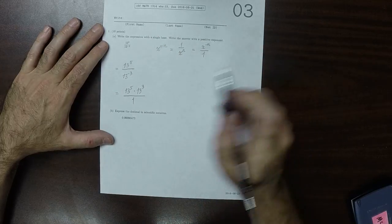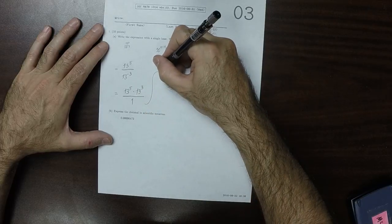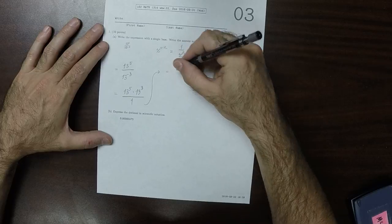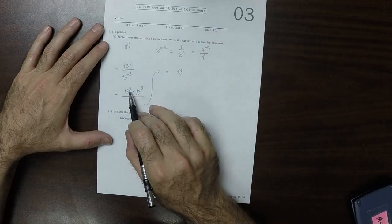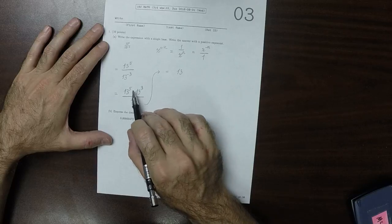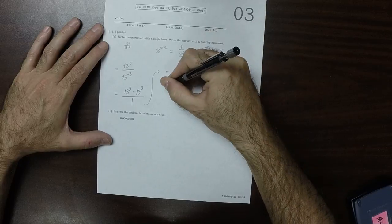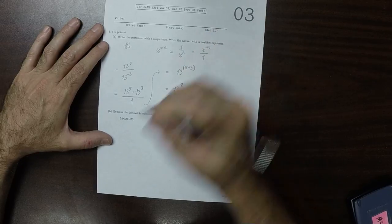And I'm just writing a 1 there so you remember it came from the denominator. So now I'll drop the denominator and just write 13. And the exponent, because these have the same base, you add the exponents. So this would be 5 plus 3. So this would be 13 to 8.